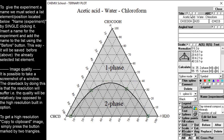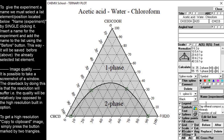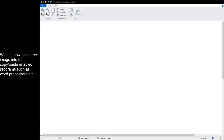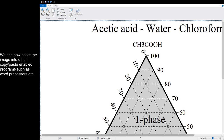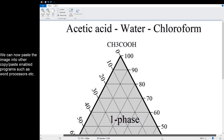To save the experiment as the first in the list, select the upper list box element by single clicking it and insert a name for the experiment. Add the experiment to the list by pressing the B4 button. To save a high resolution image of the ternary diagram to the clipboard, click the button with the double triangle. After opening a copy and paste enabled program such as a word processor or a paint program, insert the high resolution image by using the paste option.